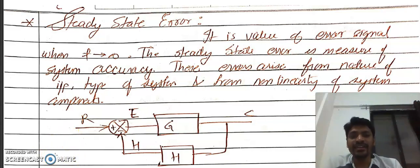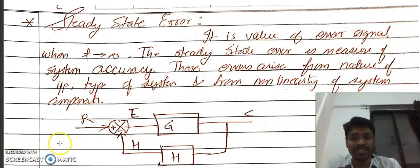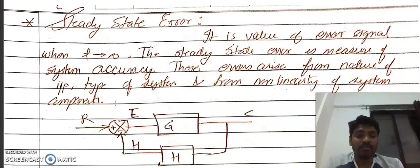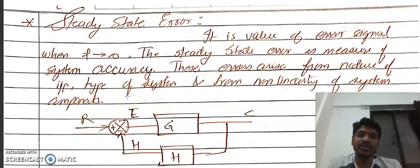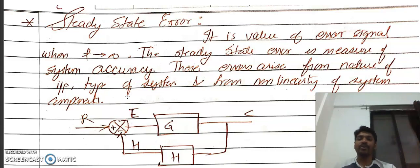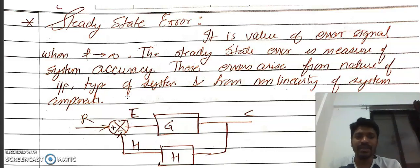Steady state error is the value of the error signal when time tends to infinity. It is a measure of system accuracy. This error depends on the type of the input, the type of the system, and it may also depend on nonlinear components used in the system. Error is the difference between the actual output and the expected output. Since we find the error when the system is stable, that is in steady state, it is called the steady state error.